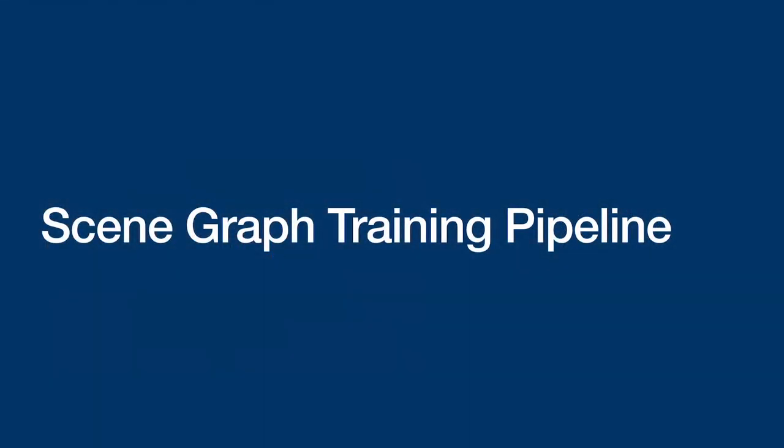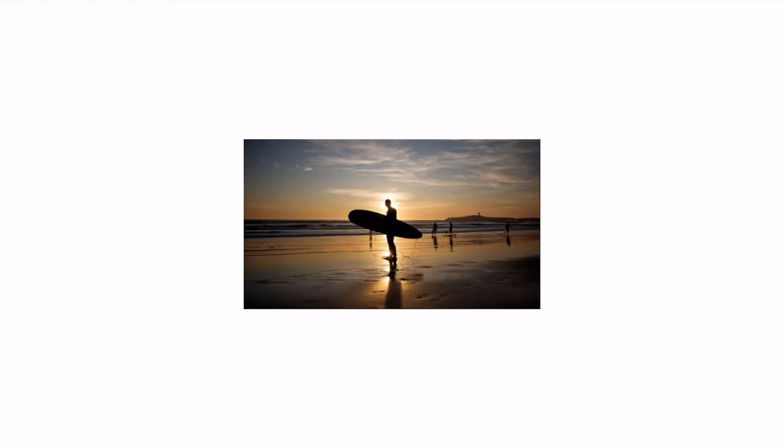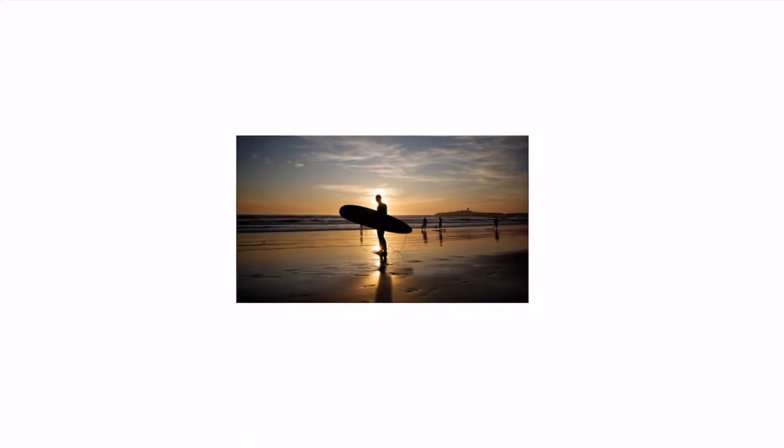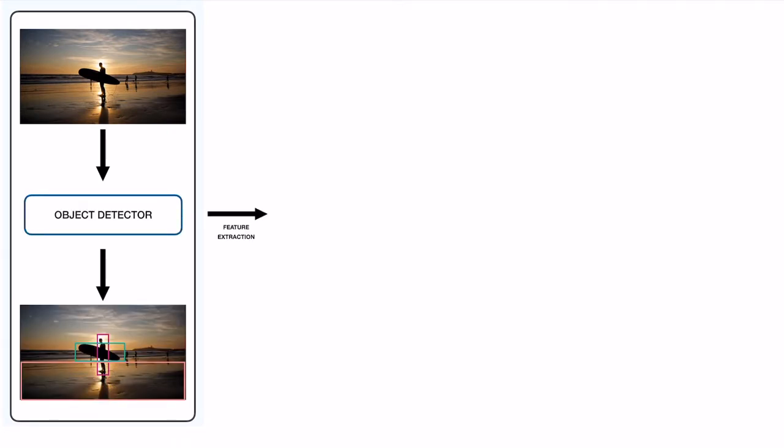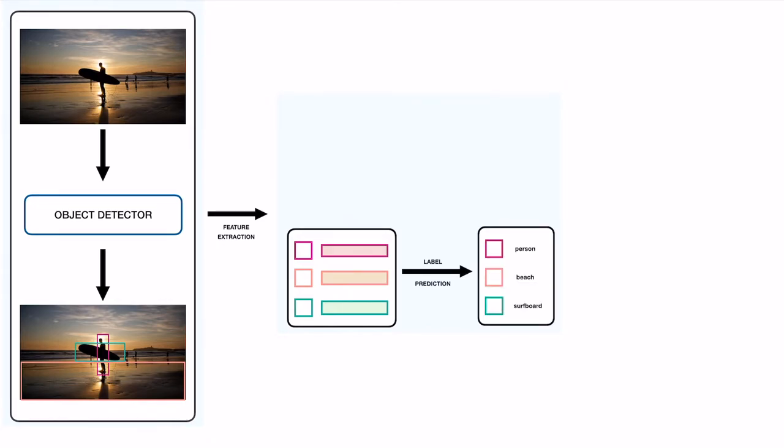Let's first take a look at a general scene graph training pipeline. Given an image as shown here, let's first pass through an object detector to identify regions of interest. Features are then extracted from these regions and classified to obtain an initial estimate of the object labels.